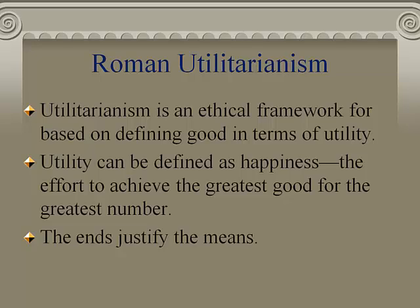Utilitarianism is based on trying to make life better — trying to create the most pleasurable, the most useful items for the largest number of people. For utilitarianism, the end justifies the means. We can see this in the Romans' concept of Pax Romana. Pax Romana was not necessarily the most compassionate policy — it came at the expense of oppressing minorities — but for the Romans this was justified because it imposed a type of peace that served a larger number of people, seeking to create happiness and peace for the greatest number.